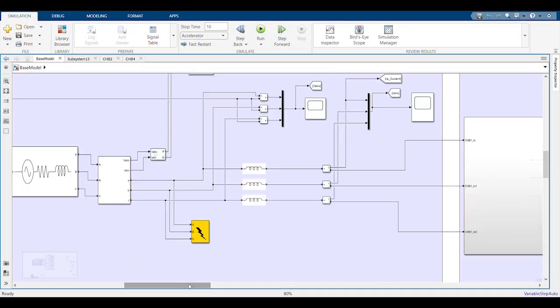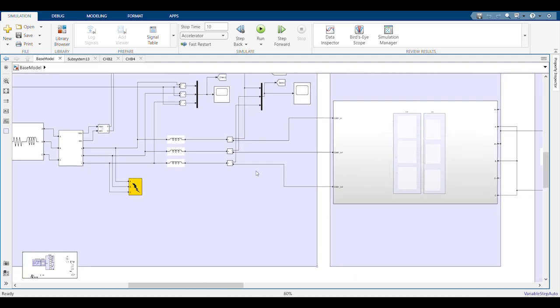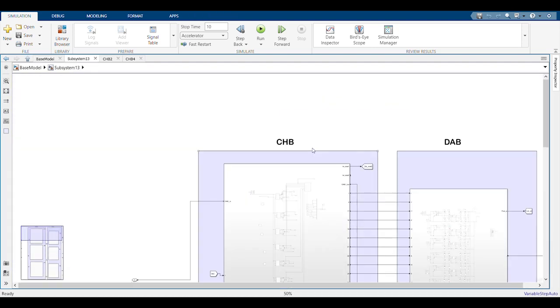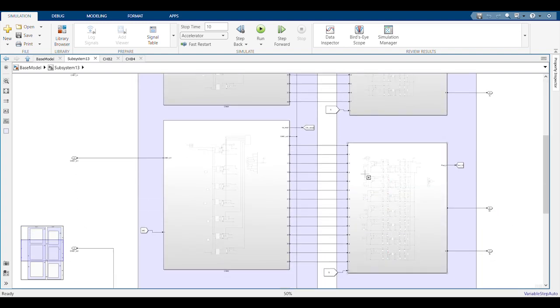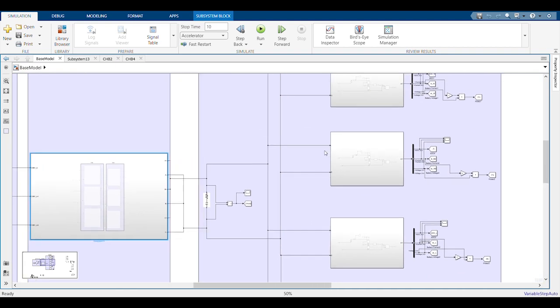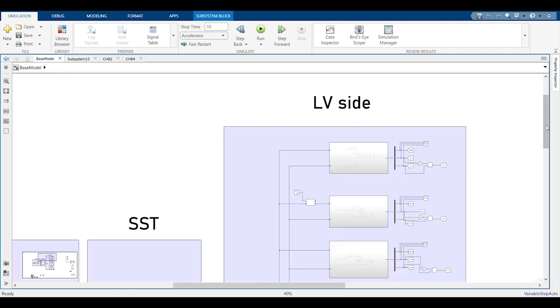The faults can happen before the SST within the medium voltage side. The solid state transformer is made of several cascaded H-bridge converters connected to dual active bridge converters. DC output of the dual active bridges are parallel to create a low voltage bus to feed the different types of loads.